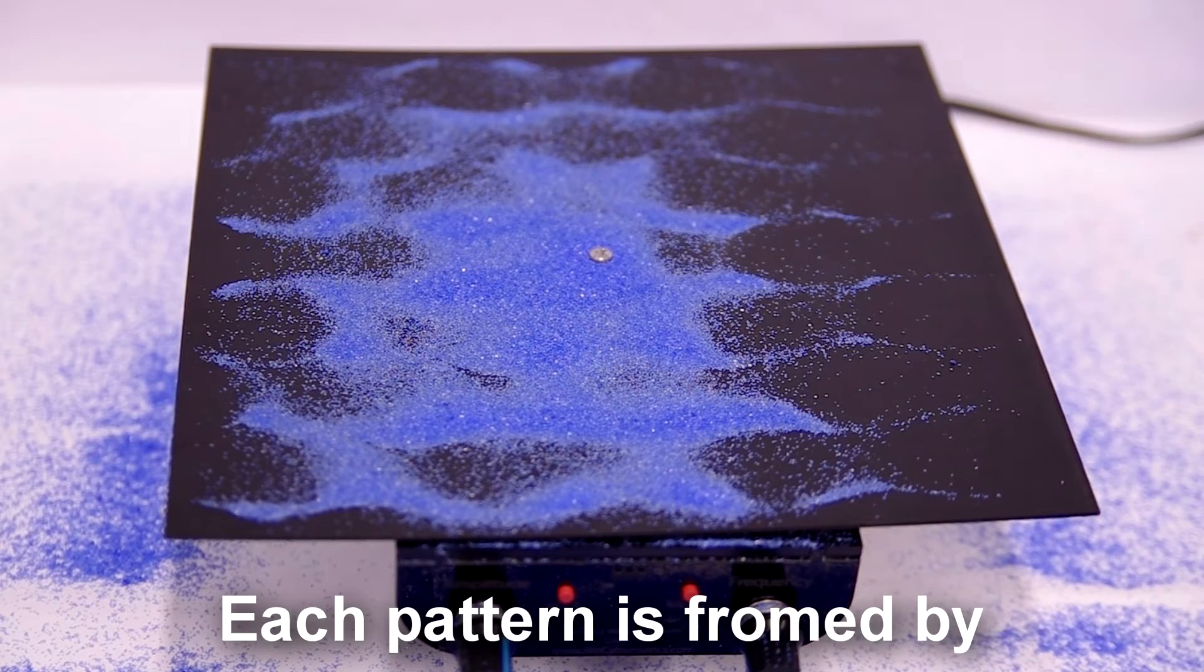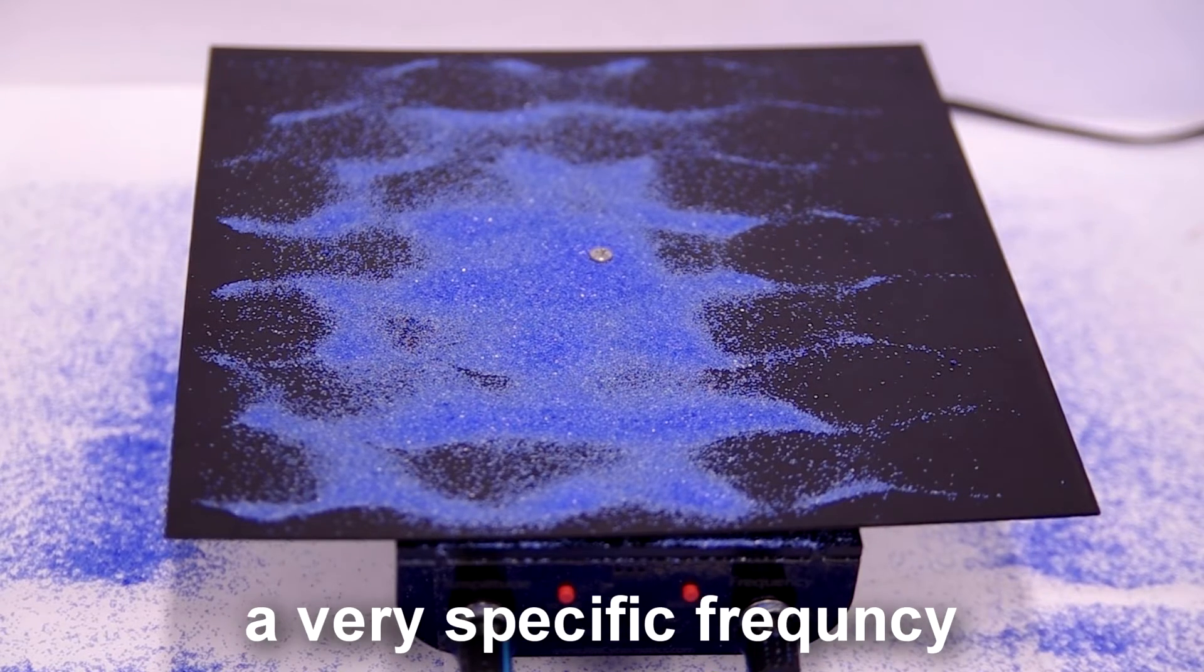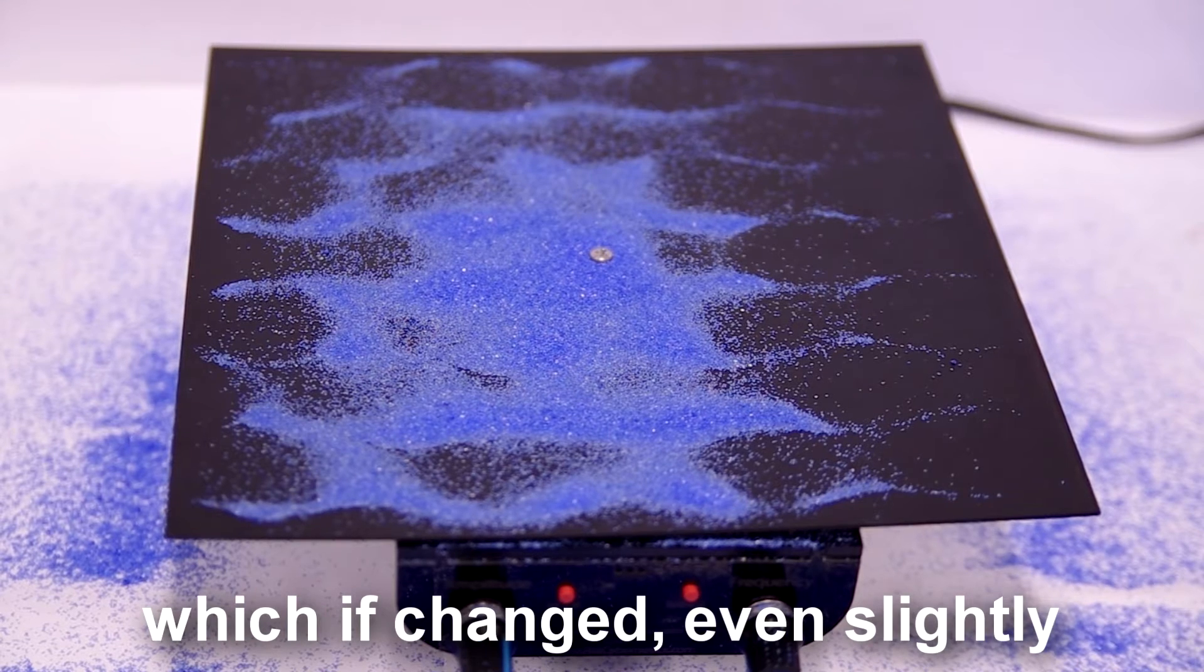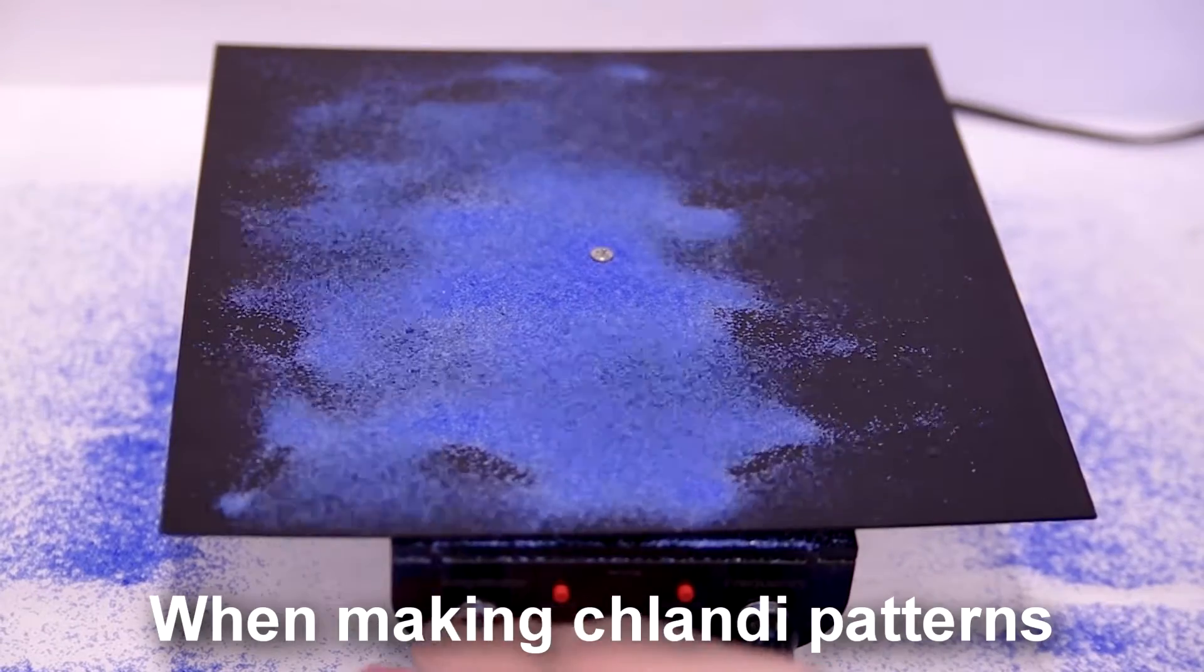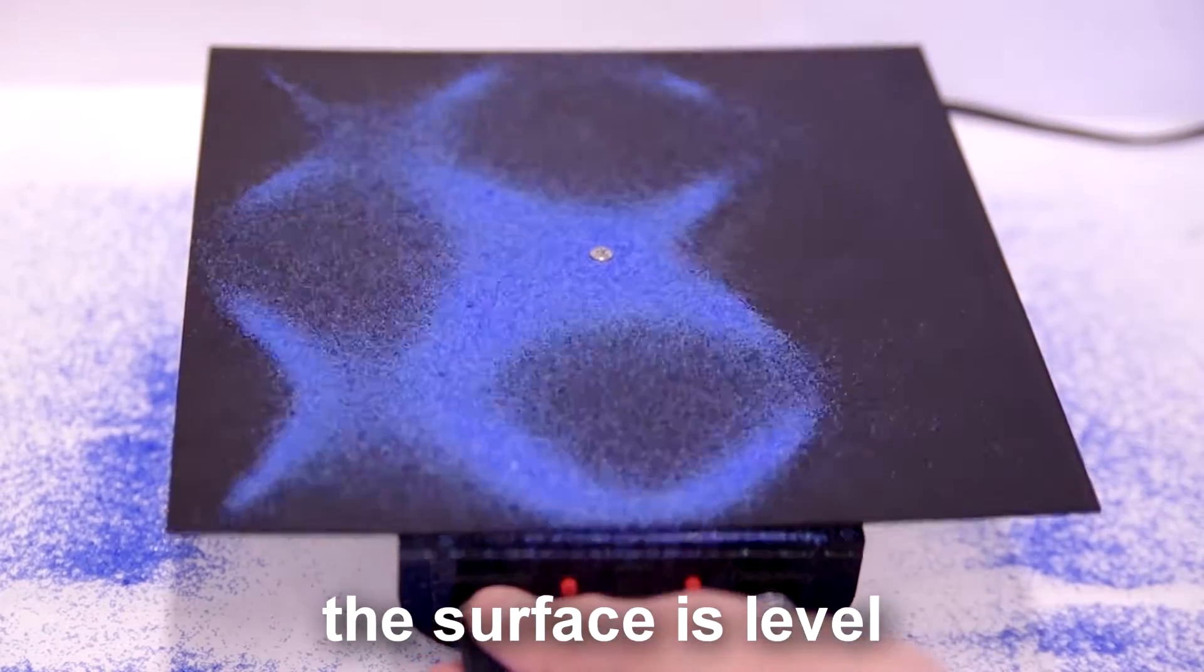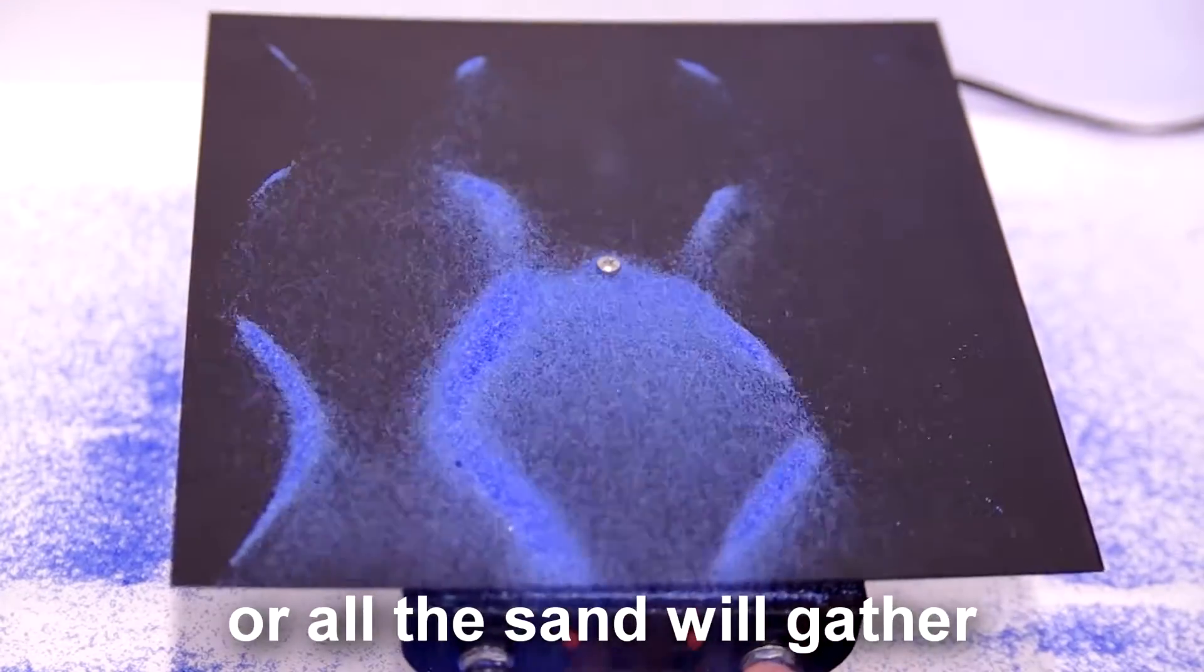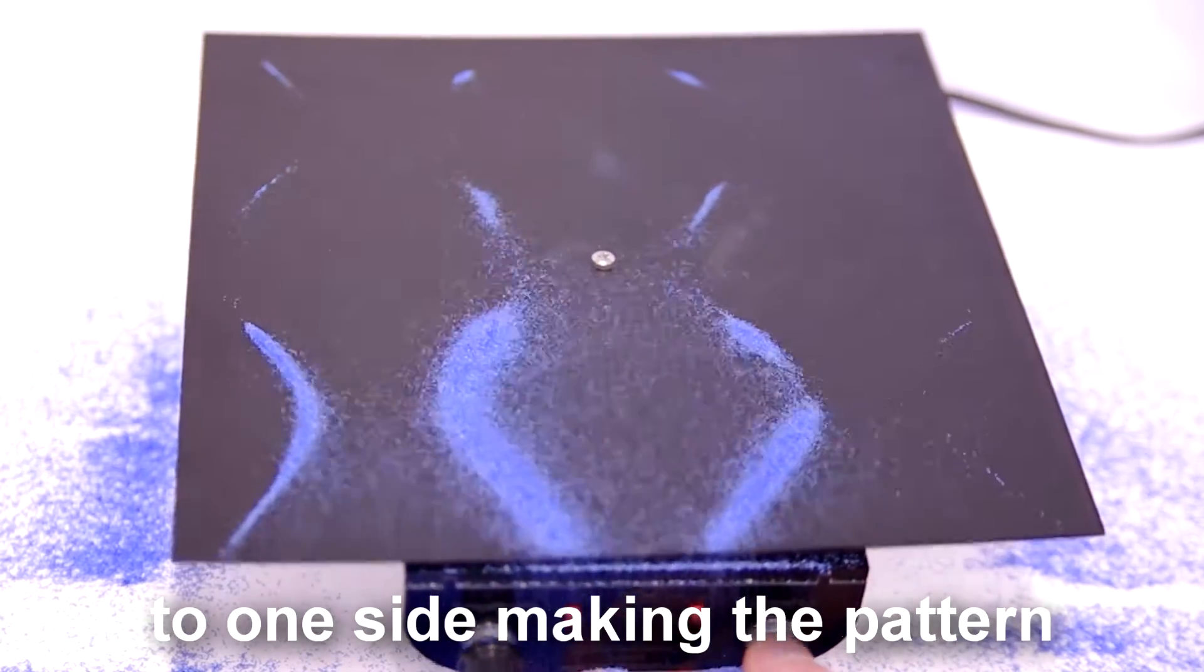Each pattern is formed by a very specific frequency which if changed even slightly could cause you to lose the pattern. When making Chladni patterns it's important to make sure the surface is level, or all the sand will gather to one side making the pattern much less impressive.